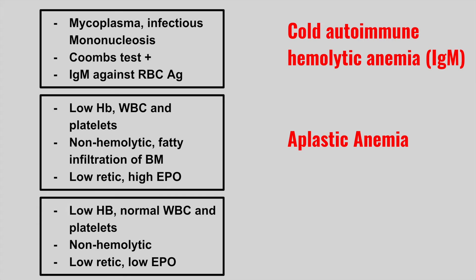Next, we're going to have a patient with low hemoglobin, normal white blood cells and platelets, also non-hemolytic with a low reticulocyte count, and a low EPO. This is chronic kidney disease. EPO is made in the kidney, so when the kidney is not functioning, it can't signal the bone marrow to produce red blood cells.